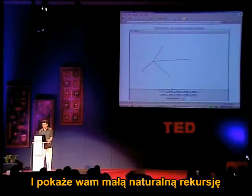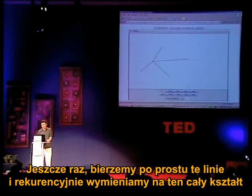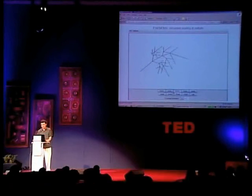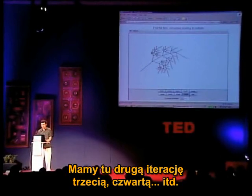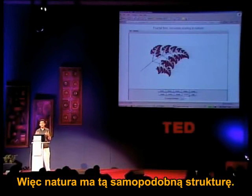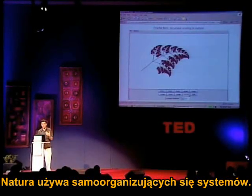I'll show you a little natural recursion here. We just take these lines and recursively replace them with the whole shape. Here's the second iteration, third, fourth, and so on. Nature has this self-similar structure. Nature uses self-organizing systems.